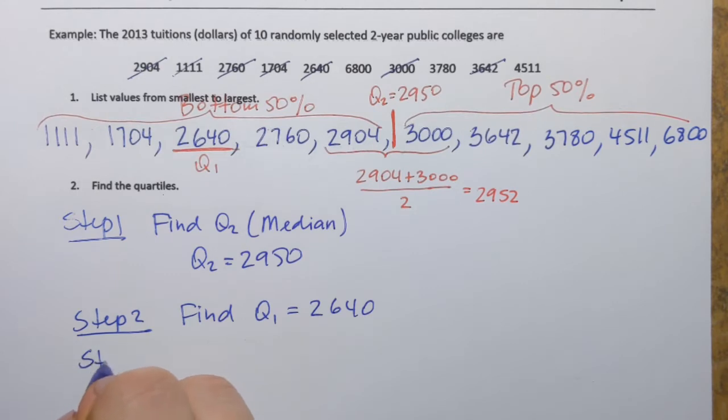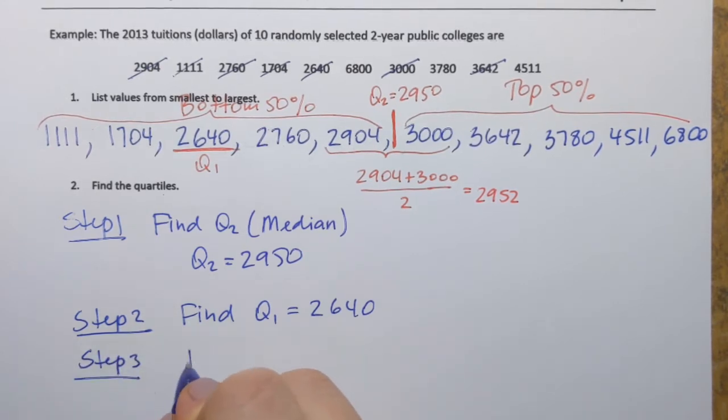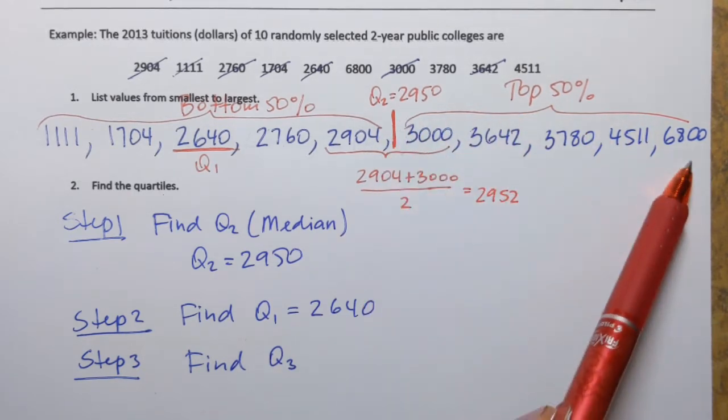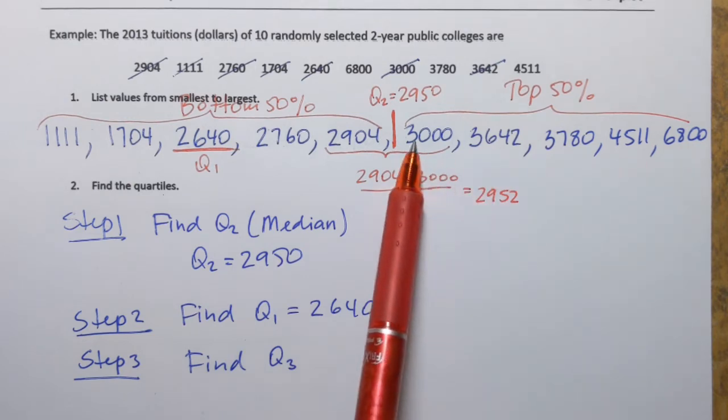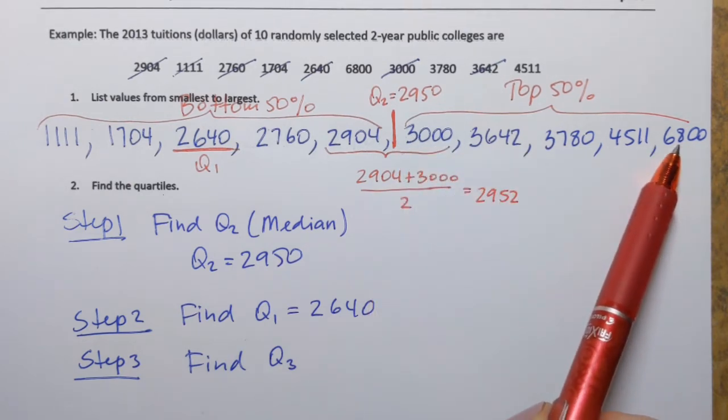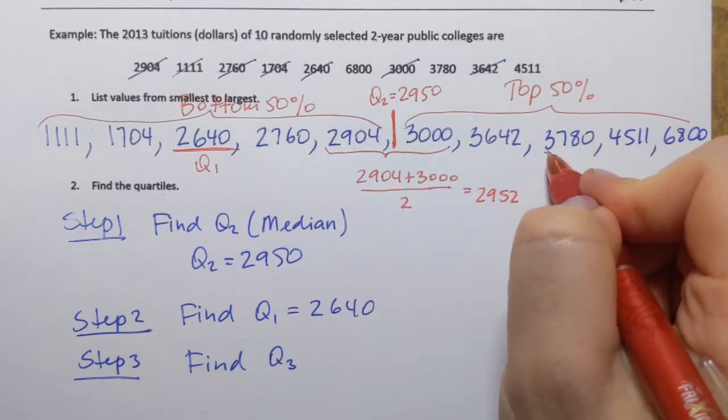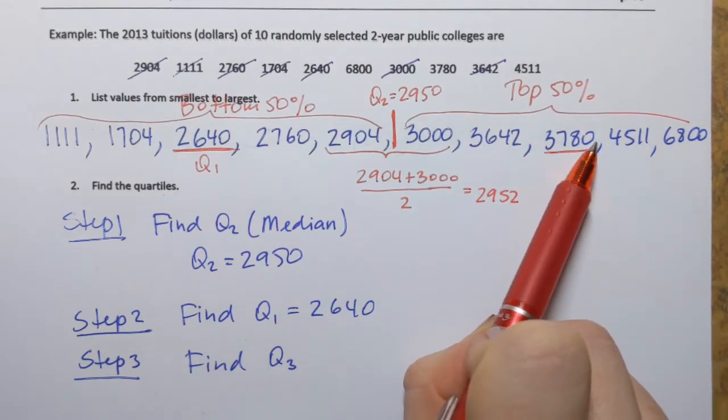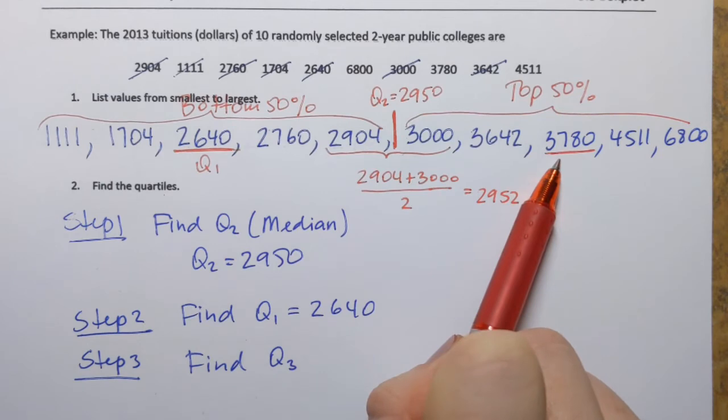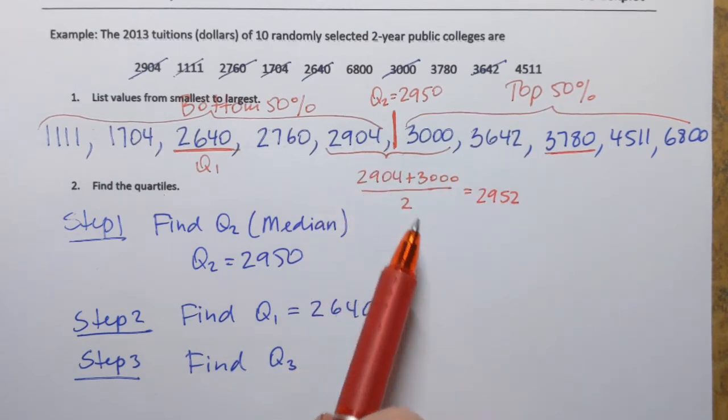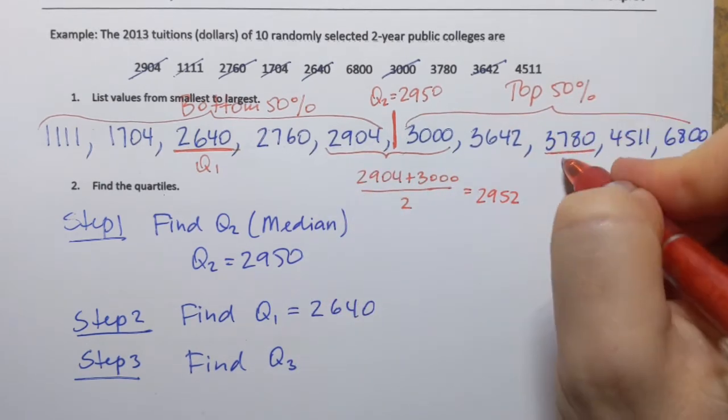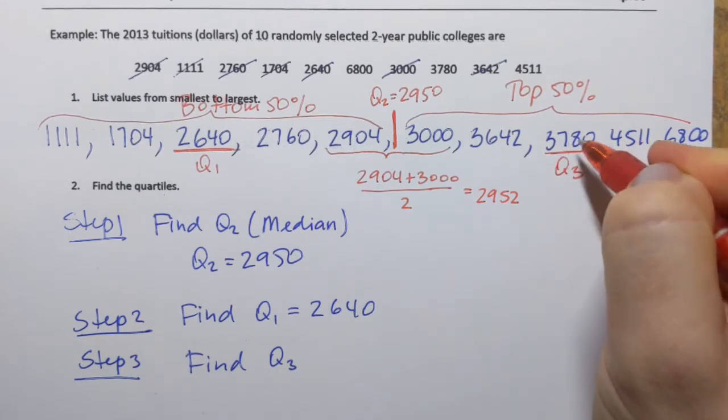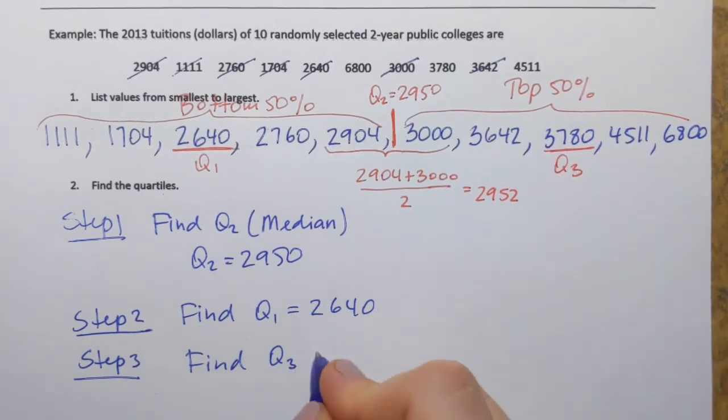And it's going to be the same idea for finding Q3. Find Q3. For that, we have to look at the top 50% of the data set and find its median. So it's going to be right in the middle. Since I have odd number of values here, it's going to be right in the middle. If I had even number of values, then I would have to take the middle two and find their average, same way as I did for Q2. So in this case, Q3 is 3,780.